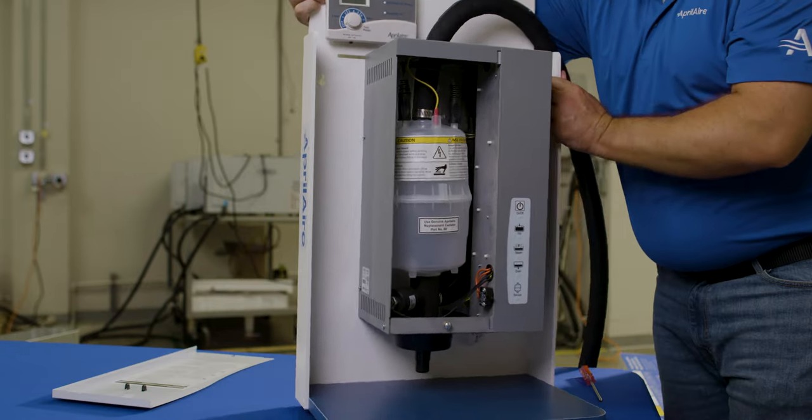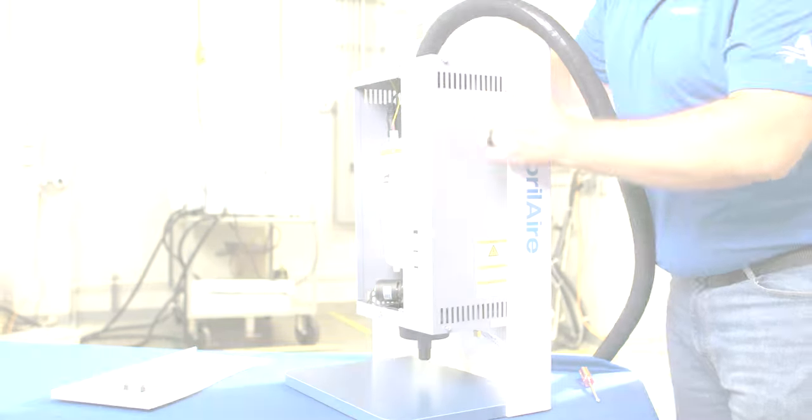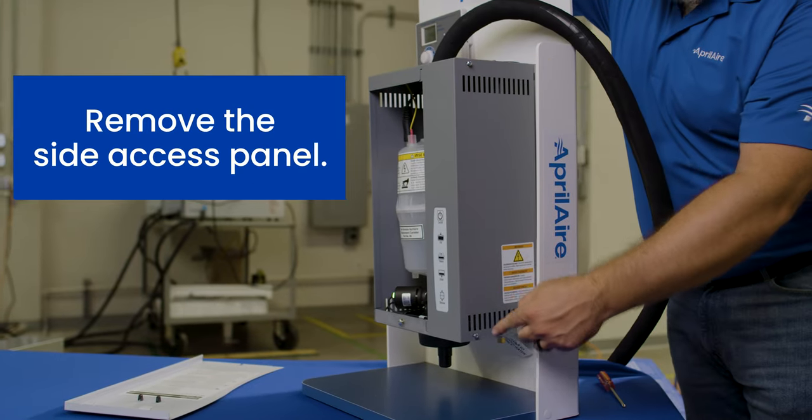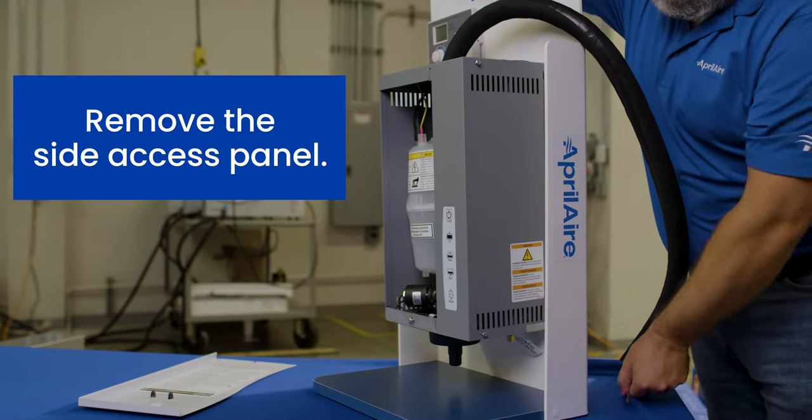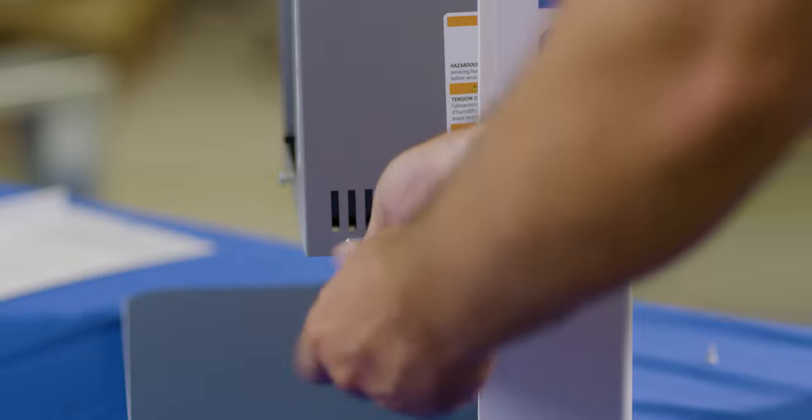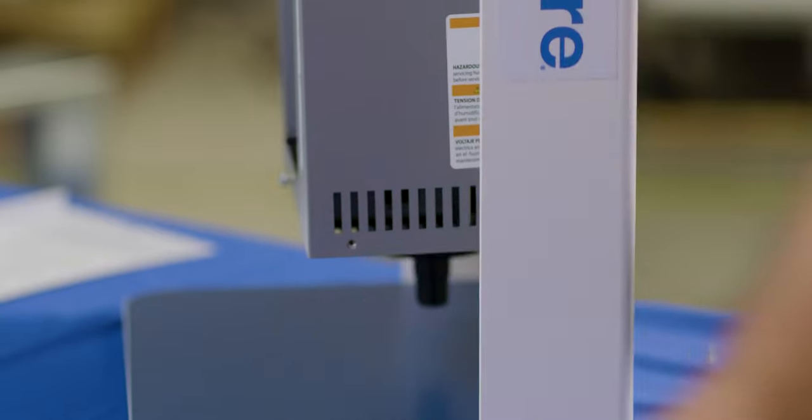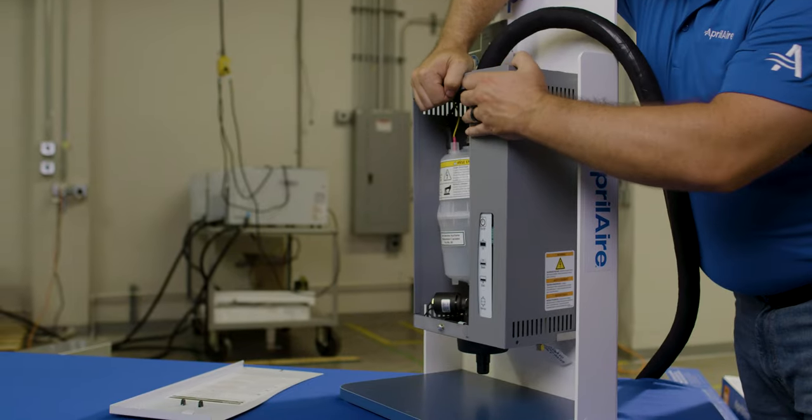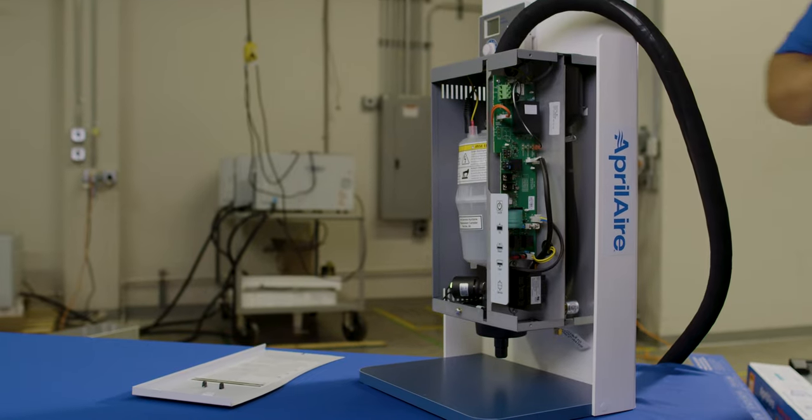In order to gain access to the printed circuit board and remove the electrode leads, you will have to remove the side access panel. To do so requires removing two screws using either a Phillips head screwdriver or a drill, and then pulling from the front end side to remove the side access panel.